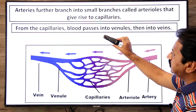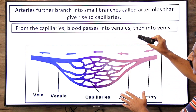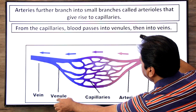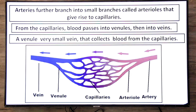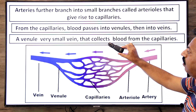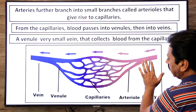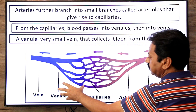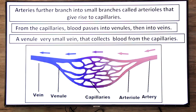From the capillaries, blood passes into the venules — blood travels from capillaries into the smaller veins called venules. A venule is a very small vein that collects blood from the capillaries. After venules, blood moves into the larger veins. So the path is: arteries → arterioles → capillaries → venules → veins.